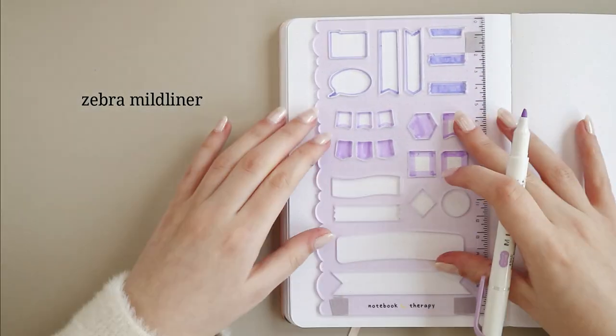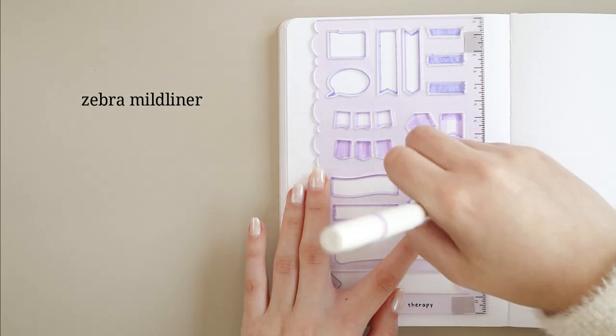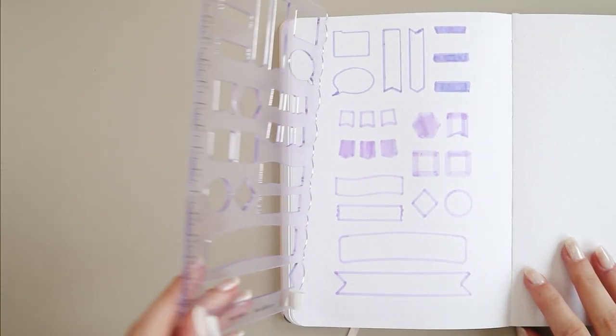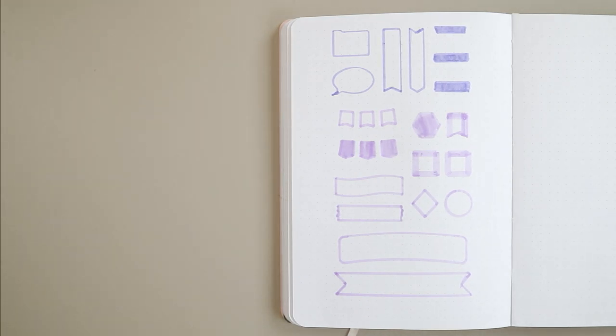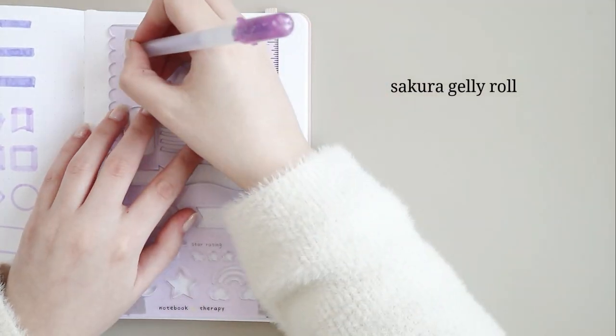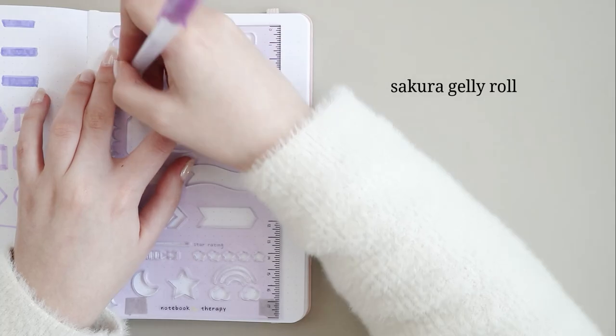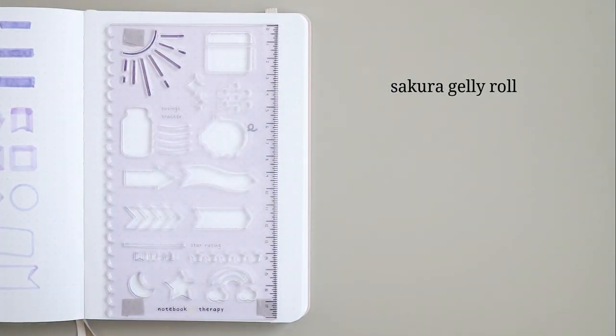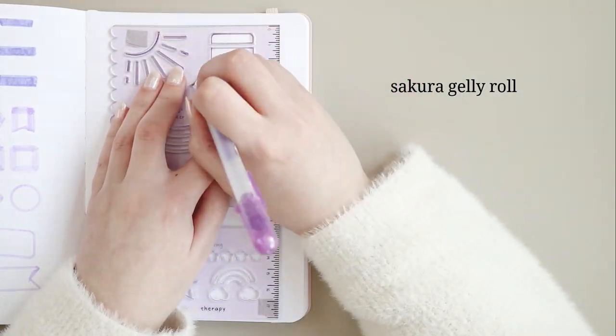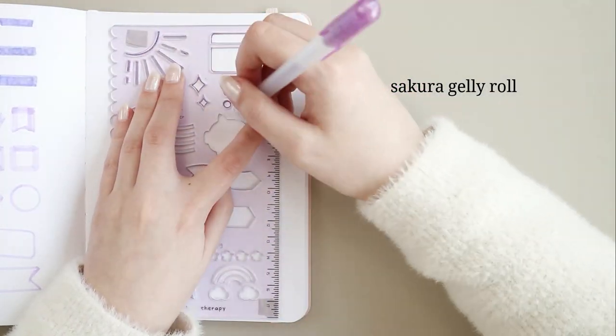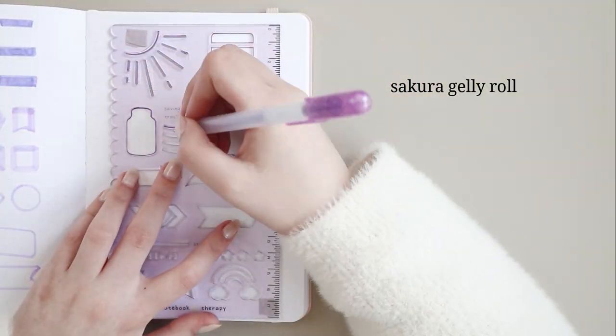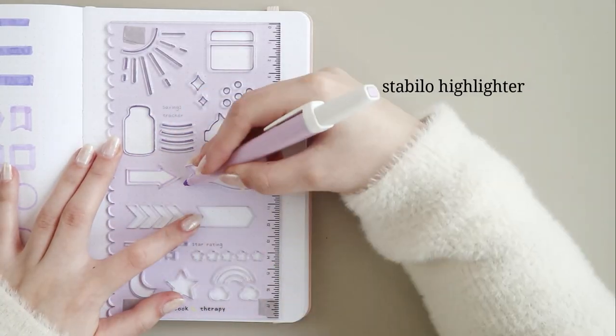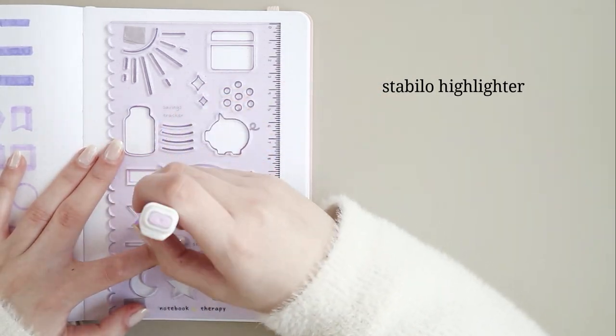Some markers that I recommend using the stencils with are the Tombow markers, Zebra Mildliners but only with the fine tip, Arteza markers and the Crayola super tips. I don't recommend highlighters or markers that have a soft tip or a brush tip like the Arteza brush pens, those don't really work on stencils. Surprisingly you can use the Tombow brush pens with the stencils. They are not perfect on the stencils but they work pretty well.